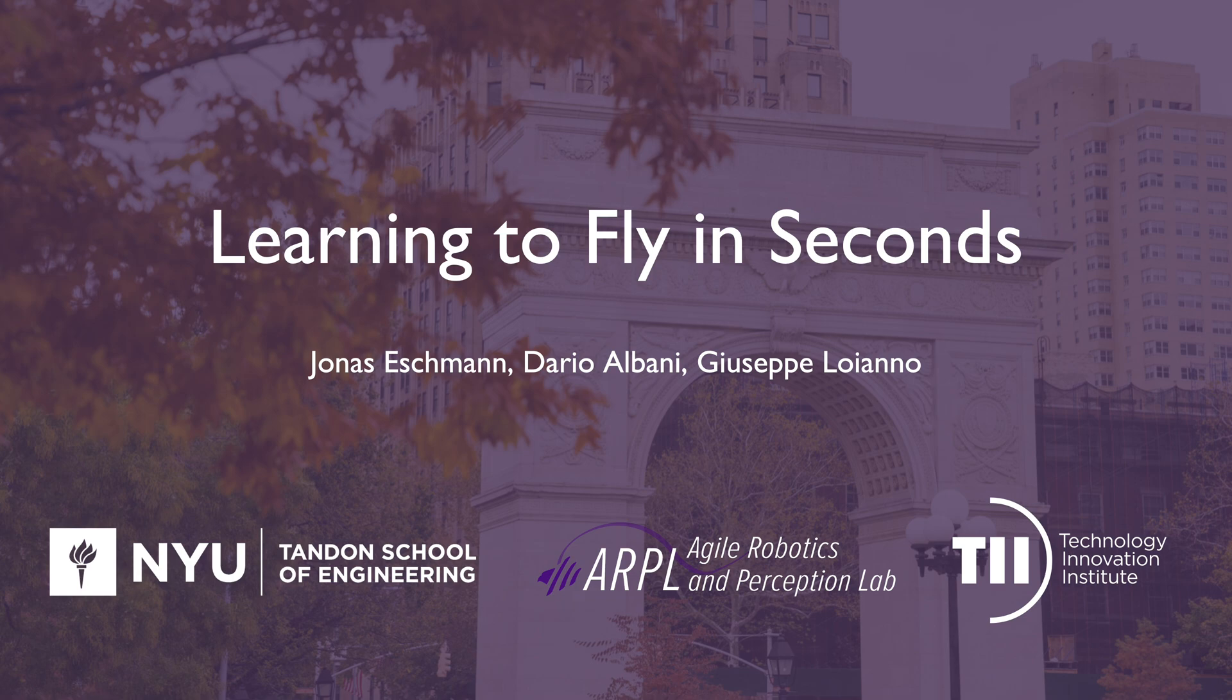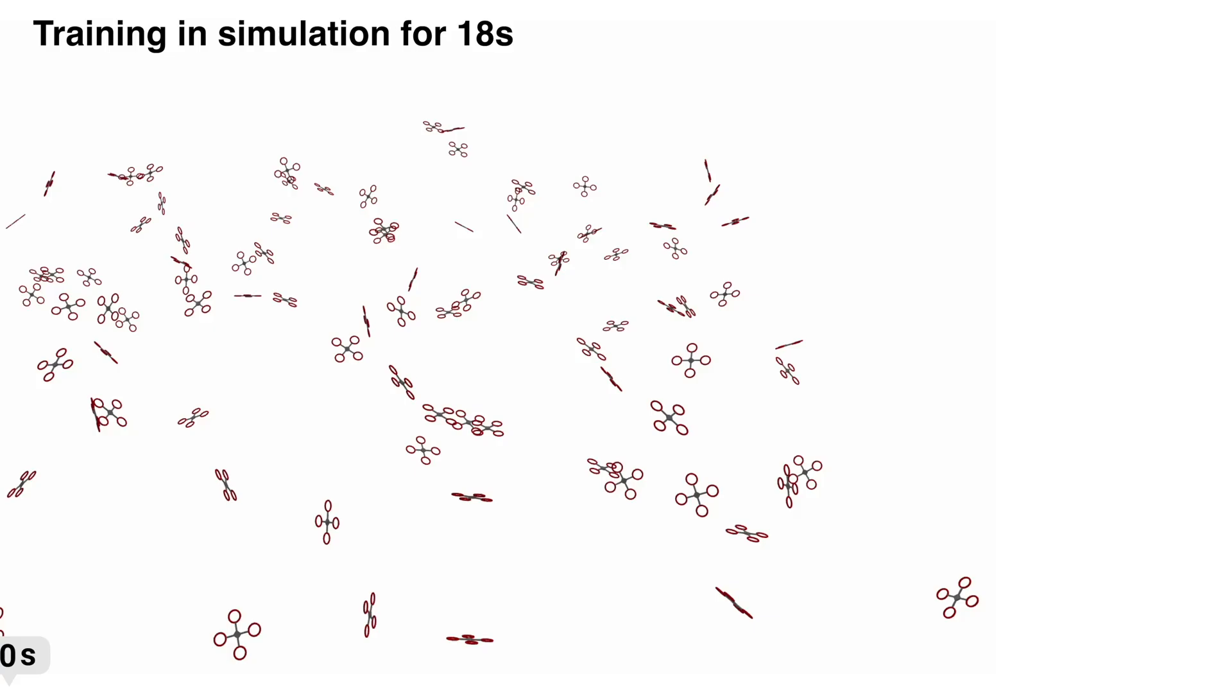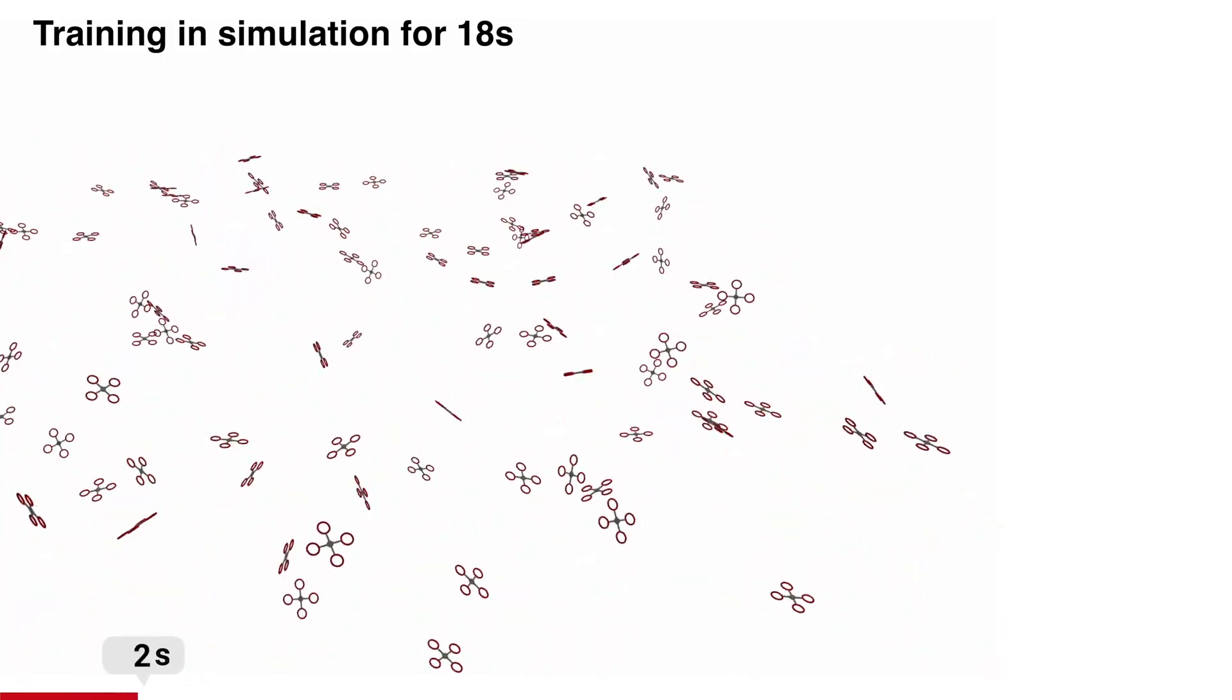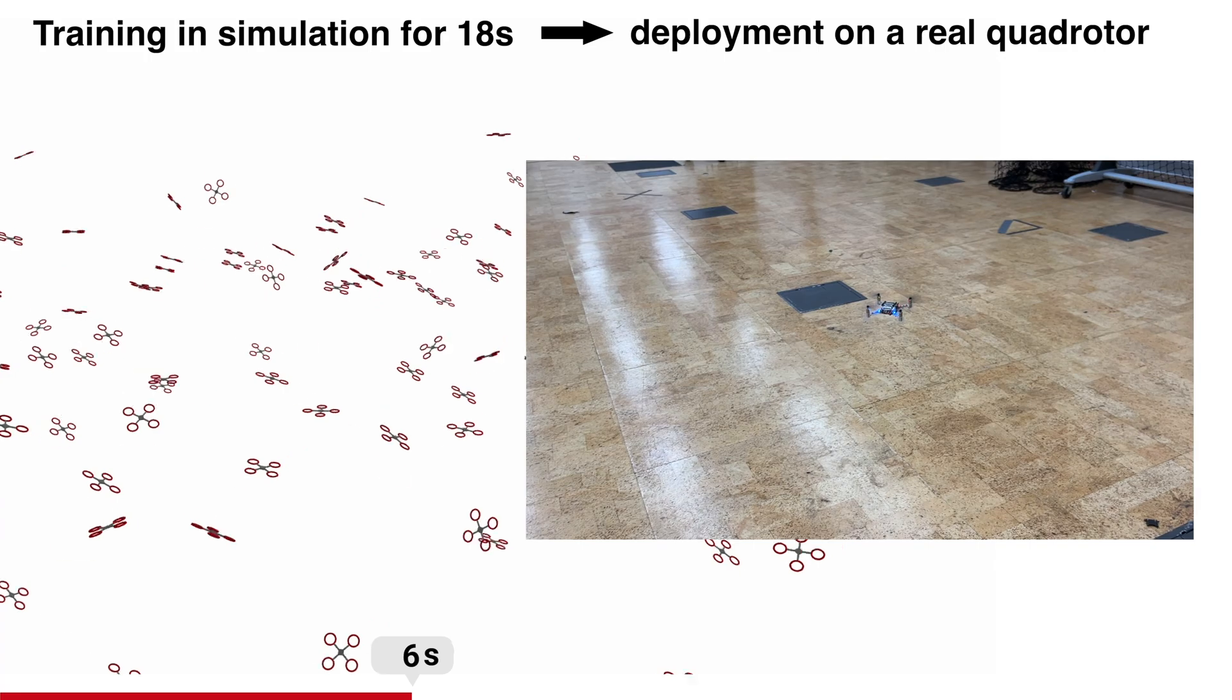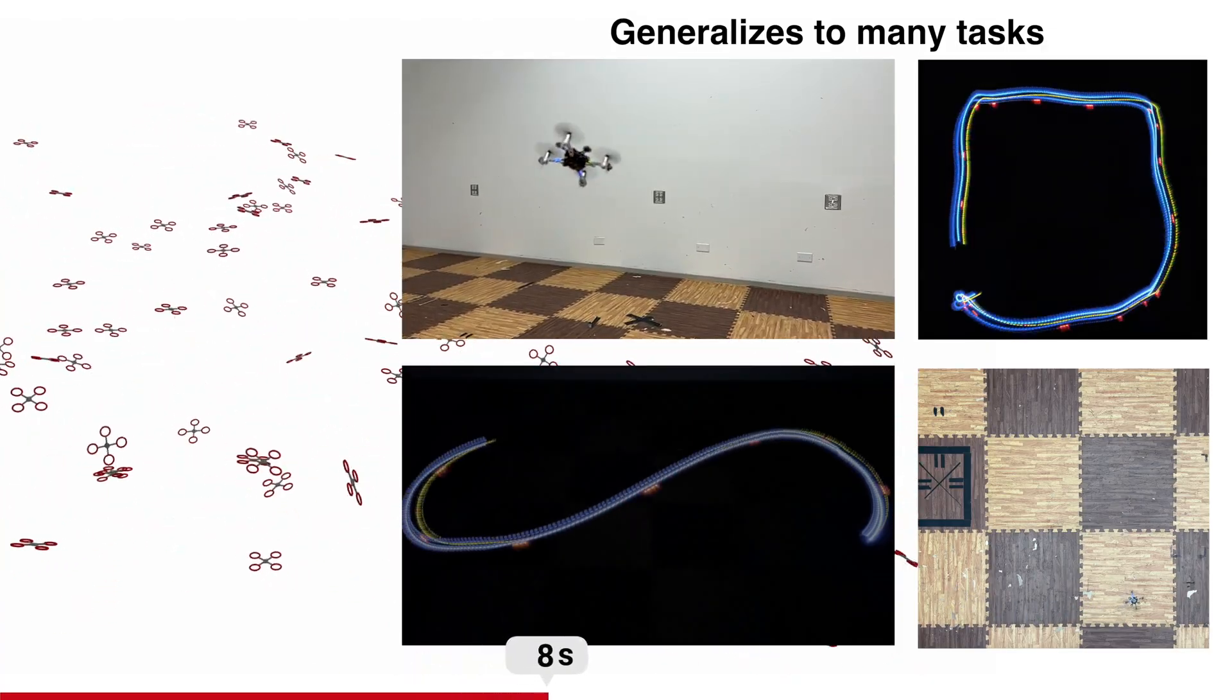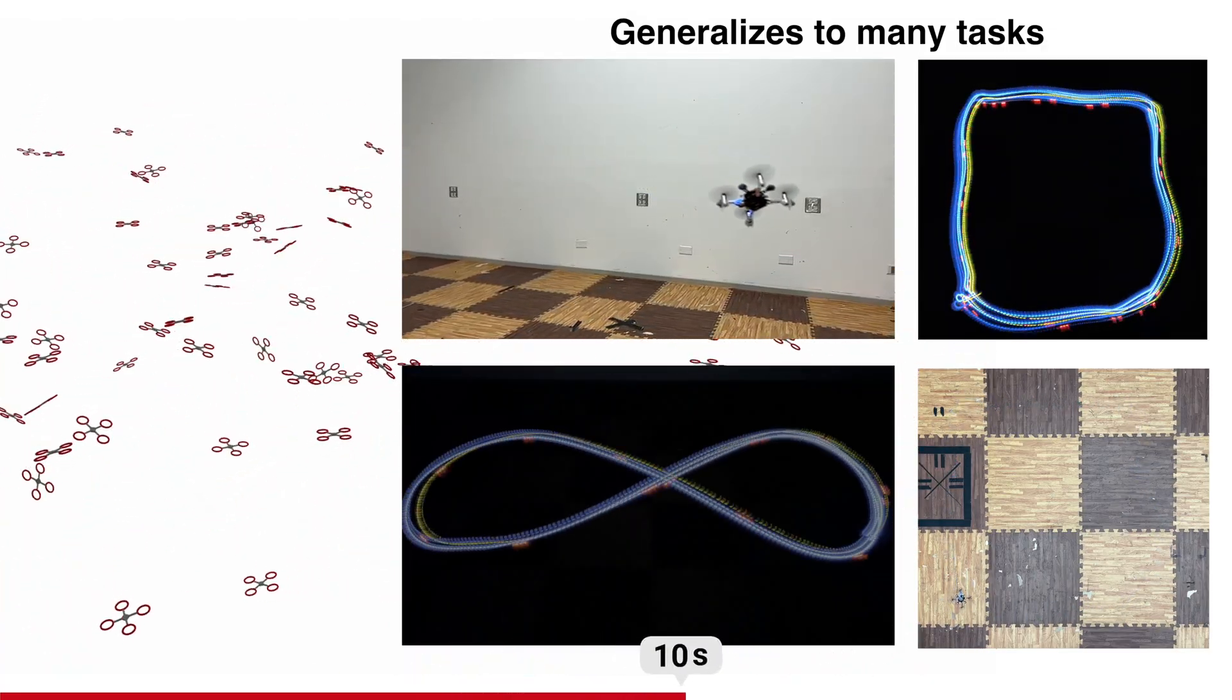In the following, we present our work on learning to fly in seconds. We show that after training on a consumer-grade laptop for just 18 seconds using deep reinforcement learning, we can directly transfer end-to-end control policies to real quadrotors.